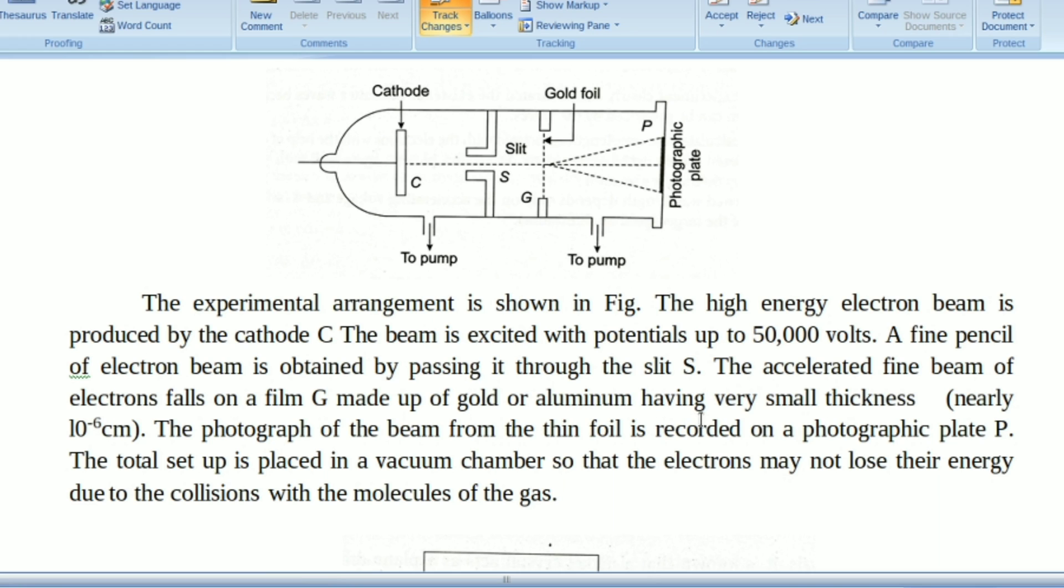The film has very thin thickness, nearly 10^-8 cm. The photograph of the beam from the thin foil is recorded on the photographic plate P.